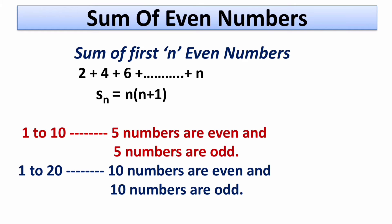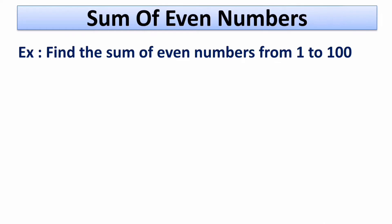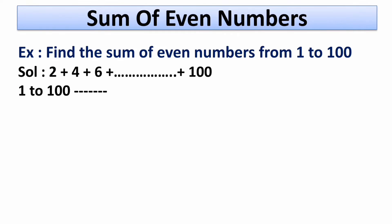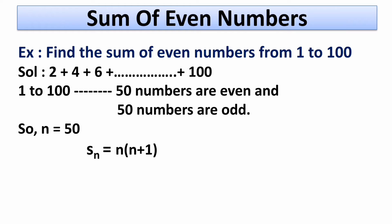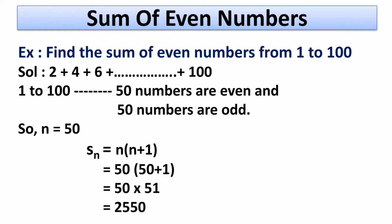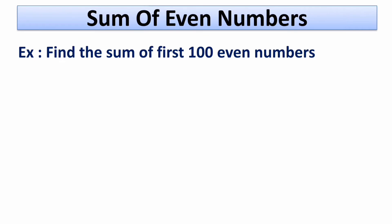Now let's start with the first problem. We have to find out the sum of even numbers from 1 to 100: 2 plus 4 plus 6 up to plus 100. From 1 to 100 we have 50 even and 50 odd numbers, so the value of n is 50. Putting this in the formula, Sn equals 50 times (50 plus 1), that is 50 multiplied by 51, equals 2550. So the sum of even numbers from 1 to 100 is 2550.